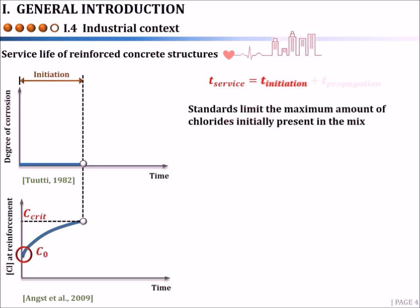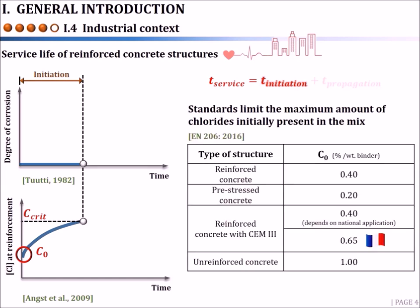For this purpose, several standards such as the EN206 limit the maximum amount of chlorides initially present in the mix according to the type of structure, where only 0.4% per weight of binder is allowed for reinforced concrete. For concrete made with cement type CEM3, it depends on the country; for example, in France, 0.65% is allowed.